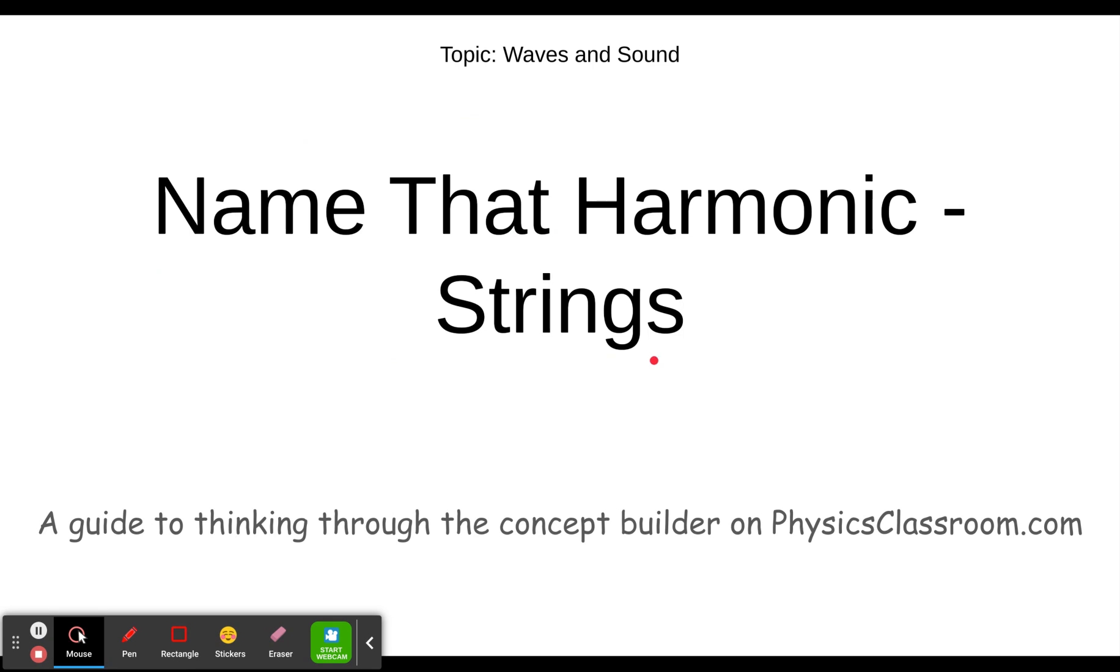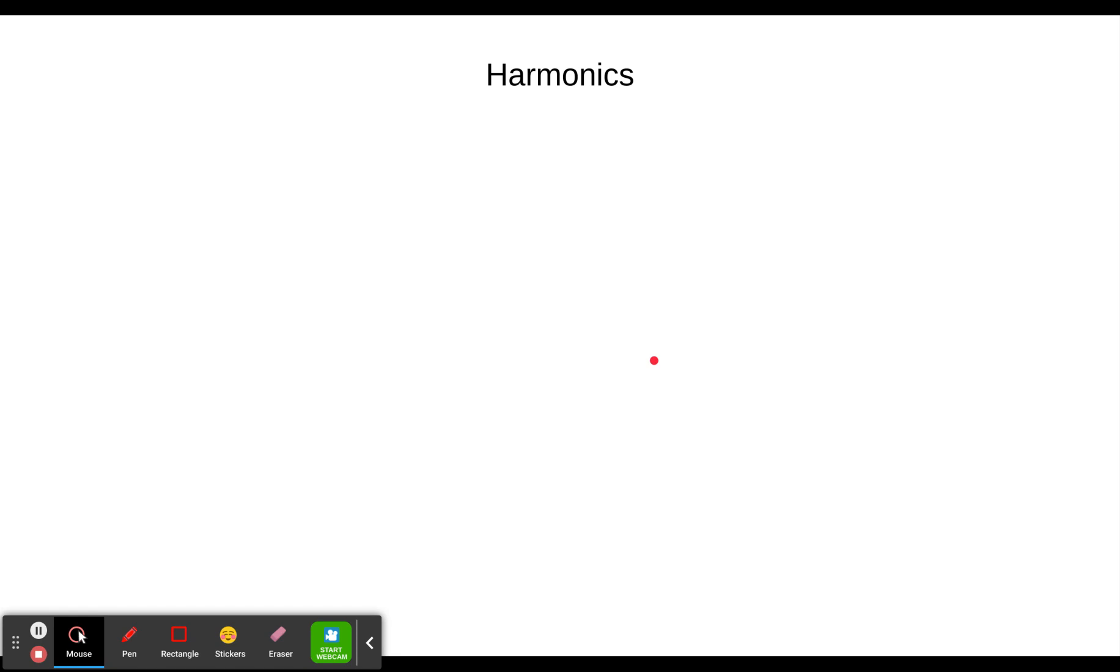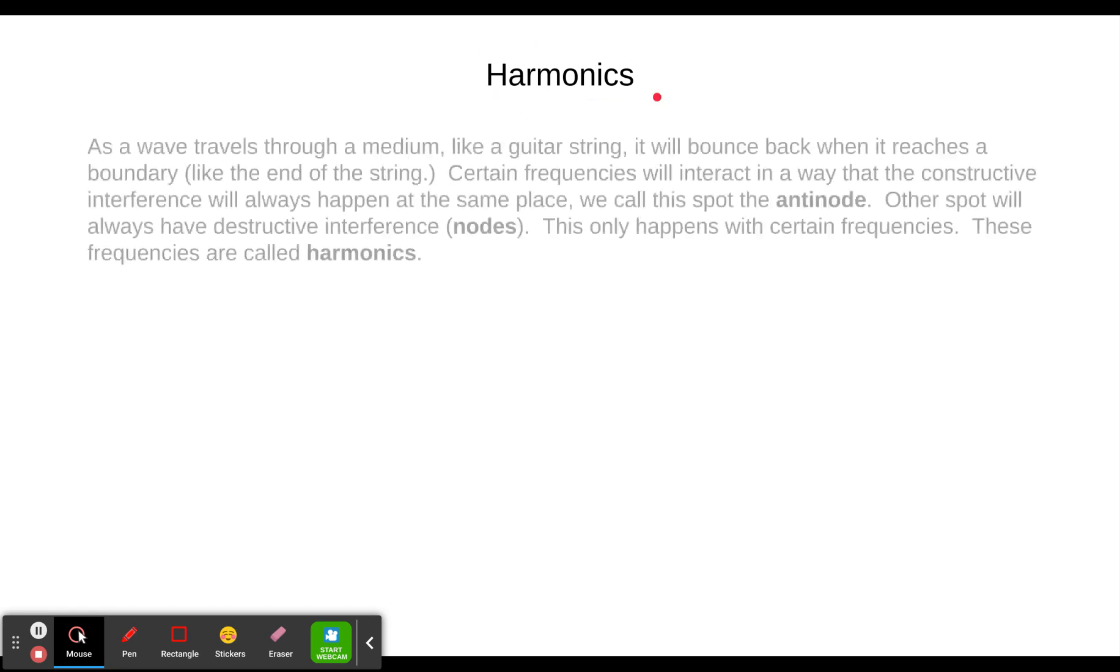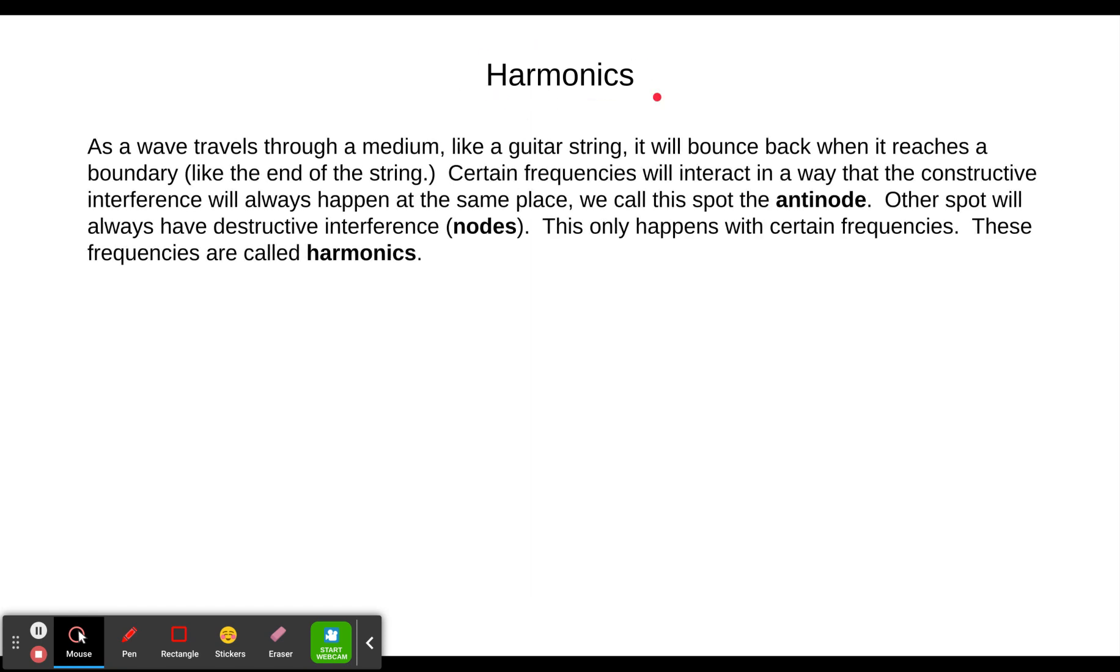So let's start with harmonics. What are harmonics? As a wave travels through a medium, in this case it's a string because we're doing Name That Harmonic Strings, but it could be a tube of air in like a clarinet or a trumpet or something like that, or just like a wind chime. But as a wave travels through a medium, it will bounce back when it reaches a boundary like the end of a string or the end of an air column.